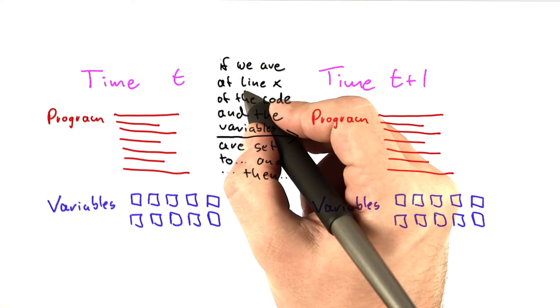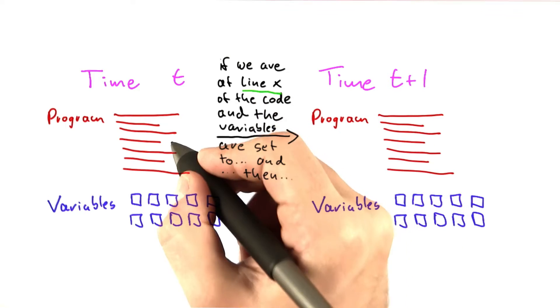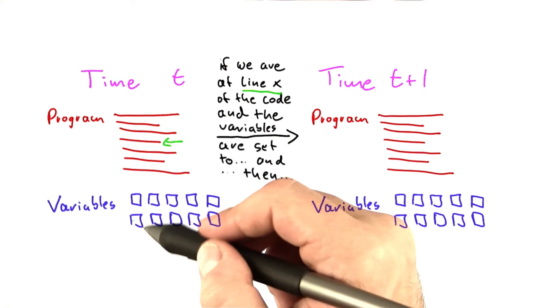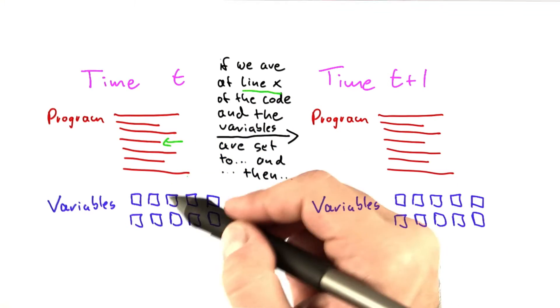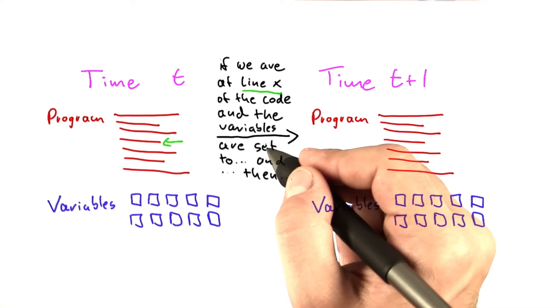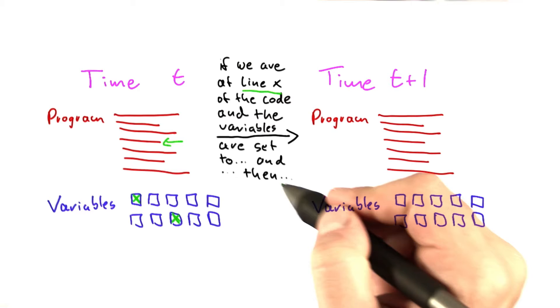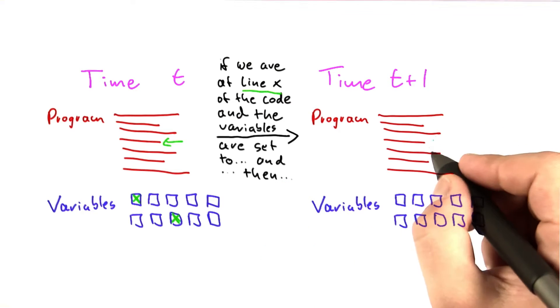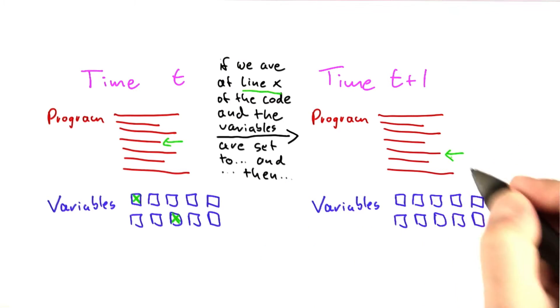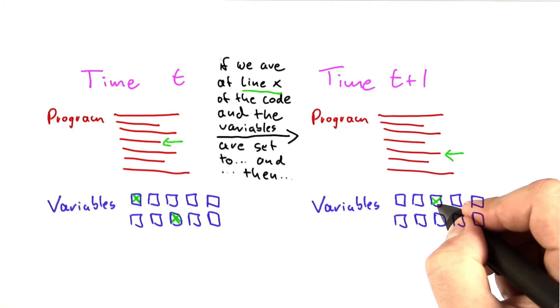If we are at a certain line of the code, say we are here, and usually that line of code will also use some variables, but it doesn't have to but usually it will of course. So certain variables are set to a given value, then we know what the program is going to do next. For example, it's going to jump to the next line of code and it's going to modify this variable here.